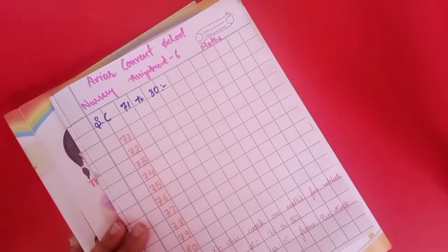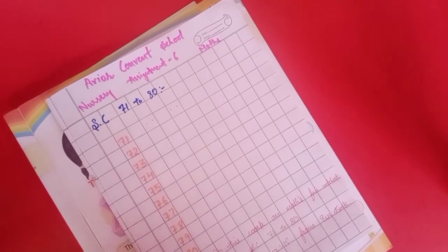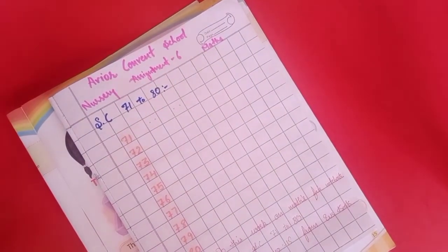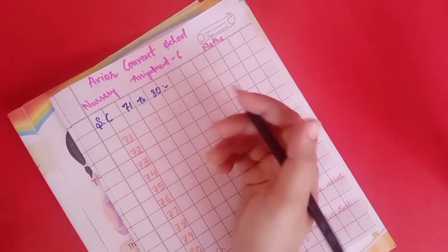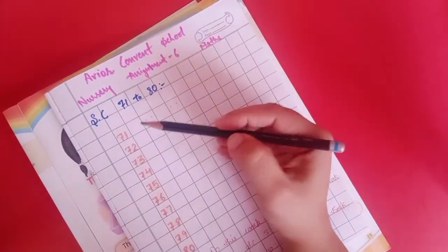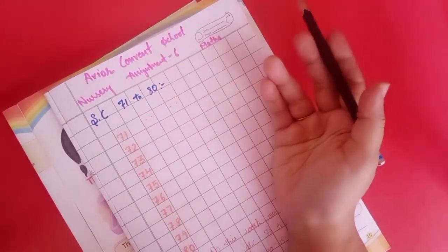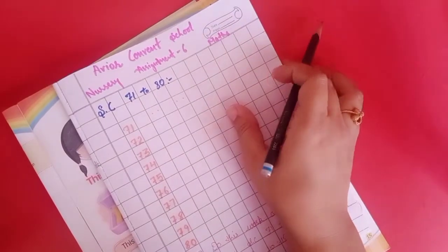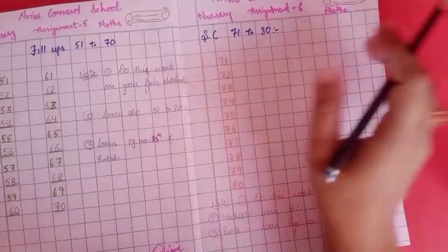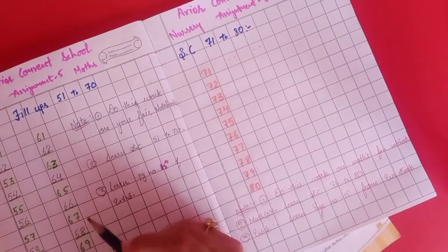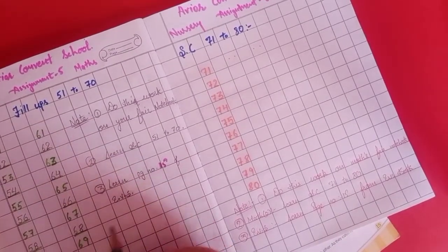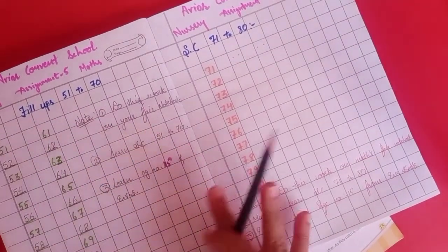Students, today we will do our math assignment number six. In this assignment we learn serial counting from 71 to 80. We already done our counting from 1 to 70 also in the previous class. Now let's start counting from 71.